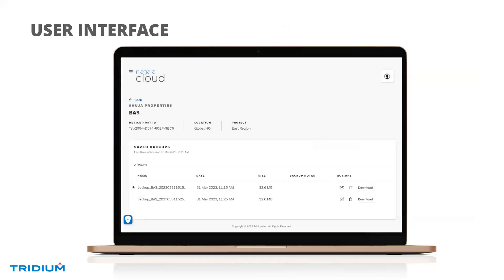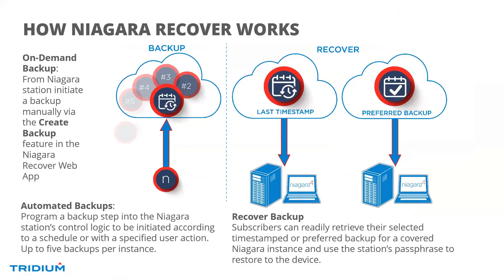Here's a peek at the user interface — this is an example of the Niagara Cloud Management portal. You can see saved backups; there's a star next to one at the top, which means it's a preferred backup. The preferred backup is your backup of choice — it will always be retained no matter how many new ones come in, serving as your staple baseline backup.